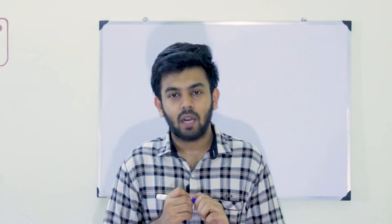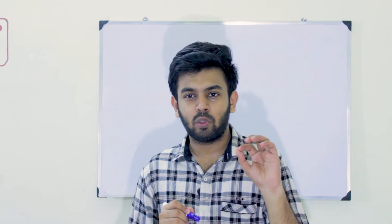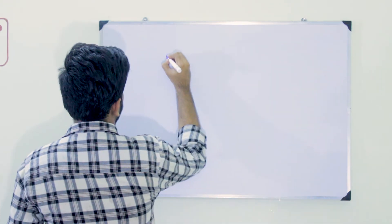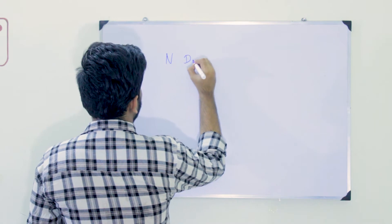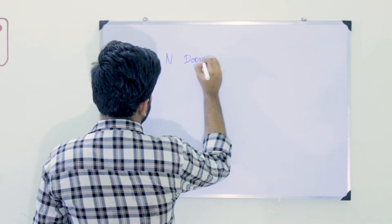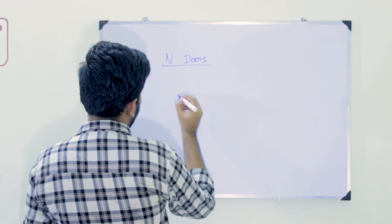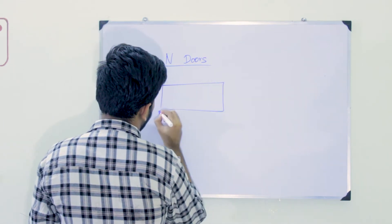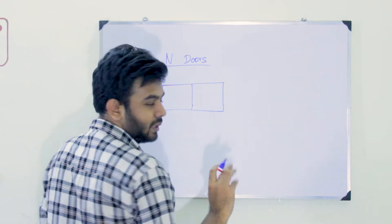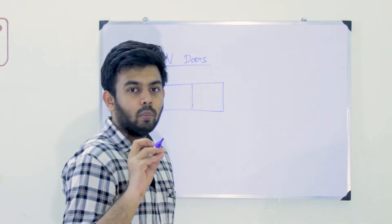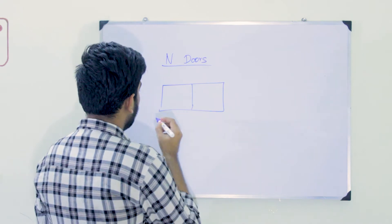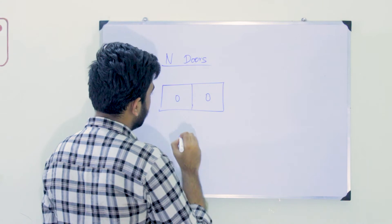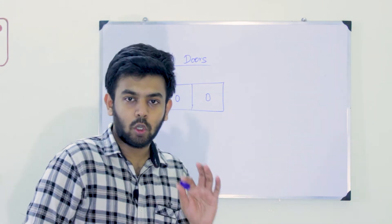This is the question. Now let's take an array. There are N doors - let's take a simple example with two doors. We will represent this as an array with two doors.